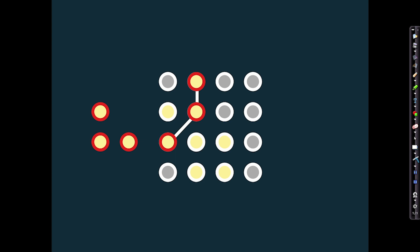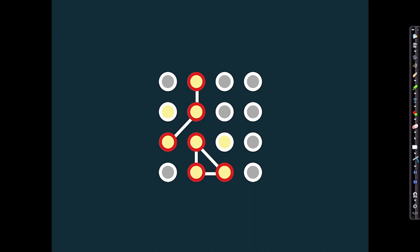Now here is another pattern of information from the environment — a different pattern that activates a different set of cortical columns. Again, as this pattern is repeatedly received from the environment, connections between those cortical columns will be generated. The brain has learned something about the structure of sensory information it is likely to receive, and it can now actually generate that pattern internally — even in the absence of sensory input — by activating those connected columns.